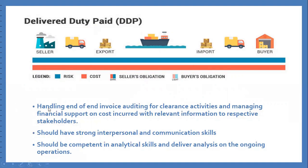The first point, which you can see on the screen, is handling end-to-end invoicing and auditing for clearance activity. For clearance activities, when our goods are in the process of examination, we need to prepare a commercial invoice and packing list. End-to-end means starting from the seller's factory to the destination. This is the process of end-to-end delivery.